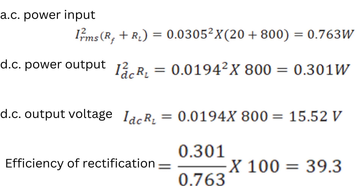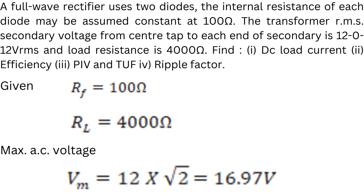Consider another problem. A full-wave rectifier has four diodes. The internal resistance of each diode may be assumed constant at 100 ohms. The transformer RMS secondary voltage from center tap to each end of the secondary is 120 volts RMS and load resistance is 4000 ohms. Find: DC load current, efficiency, peak inverse voltage, transformer utilization factor, and ripple factor. The maximum voltage is Vrms × √2 = 120 × √2 = 169.7 volts.